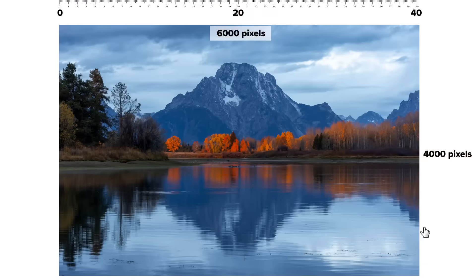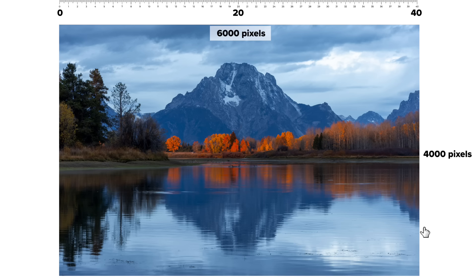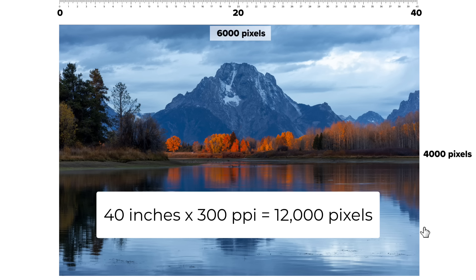Let's say I've got a photo that's too small and I want to print it bigger. I've got that 6,000-pixel photo and I want to print it at 40 inches wide, but I've done my tests — personally I'll print 150 to 180 pixels per inch all day long and for my eye those prints look just fine. But let's go with this example: I want it at 300 pixels per inch. Do the math: 40 inches times 300 pixels per inch gives you 12,000 pixels. So my 6,000-pixel photo needs to be upsized to 12,000 pixels.